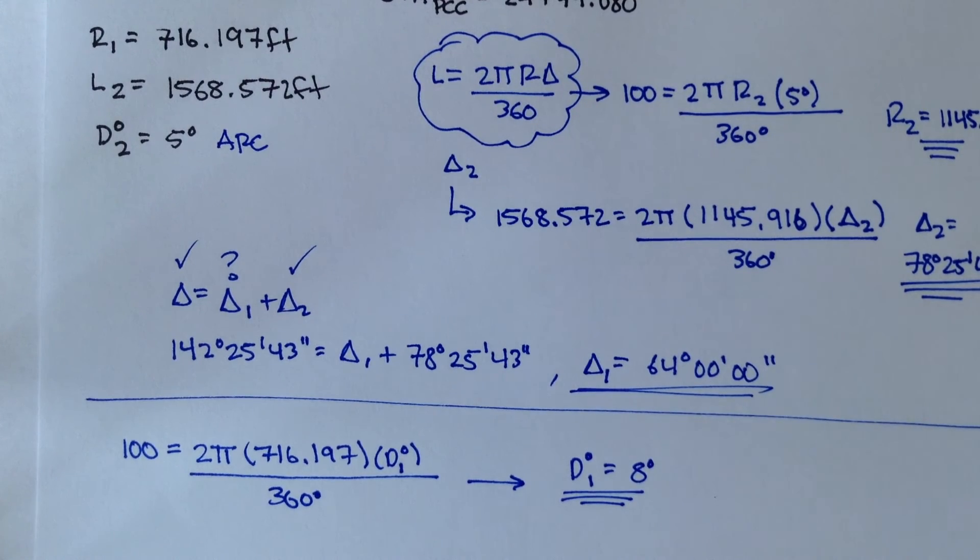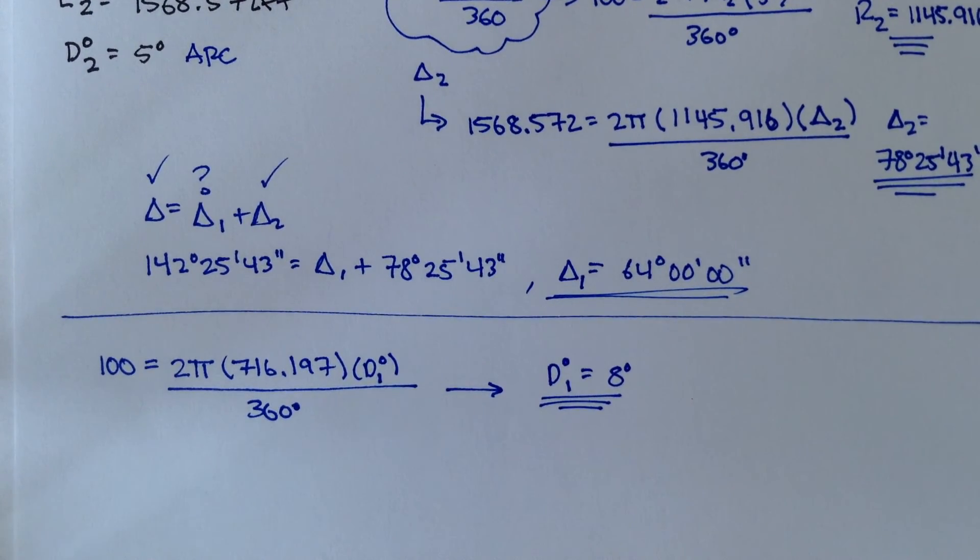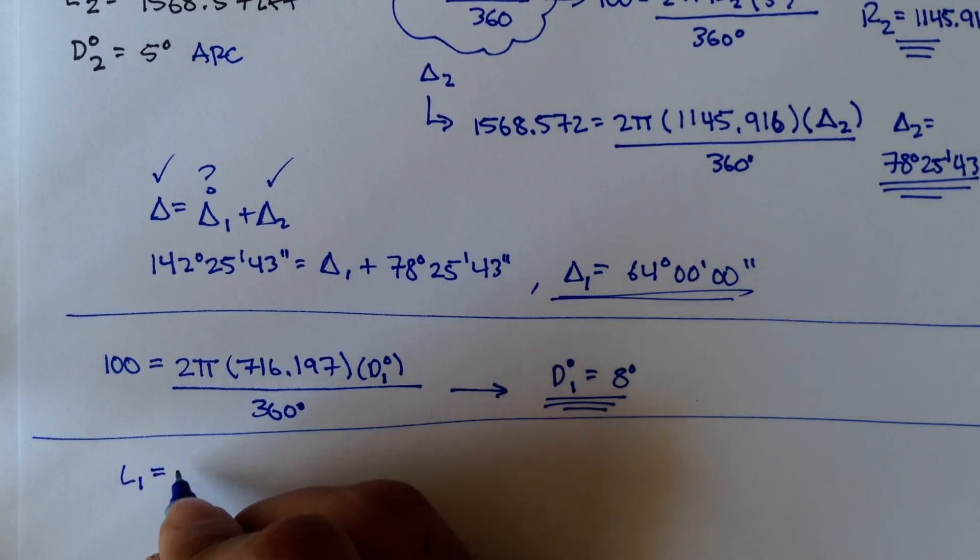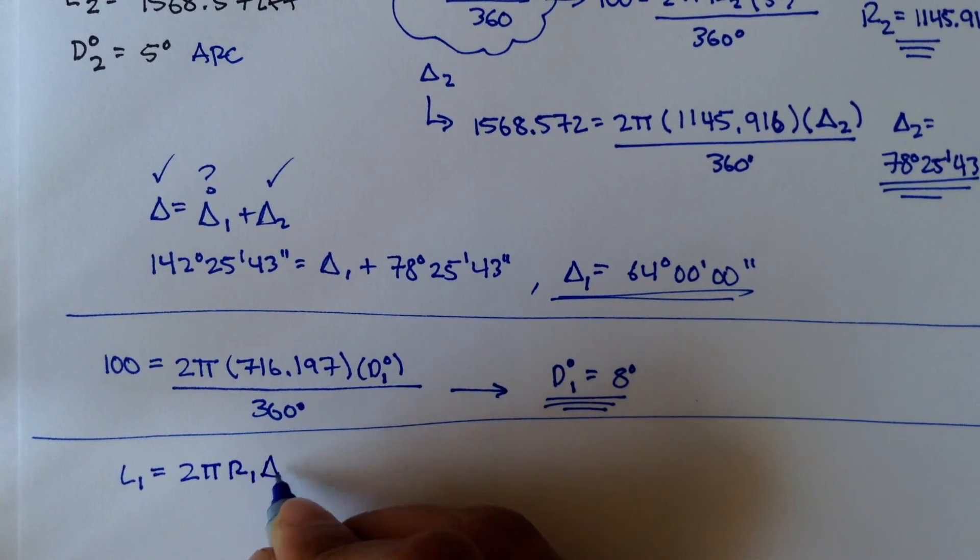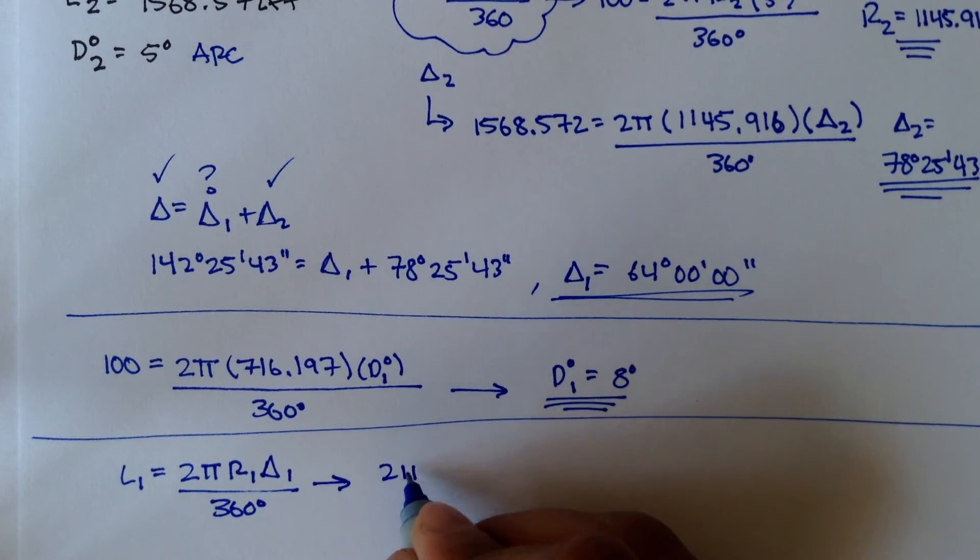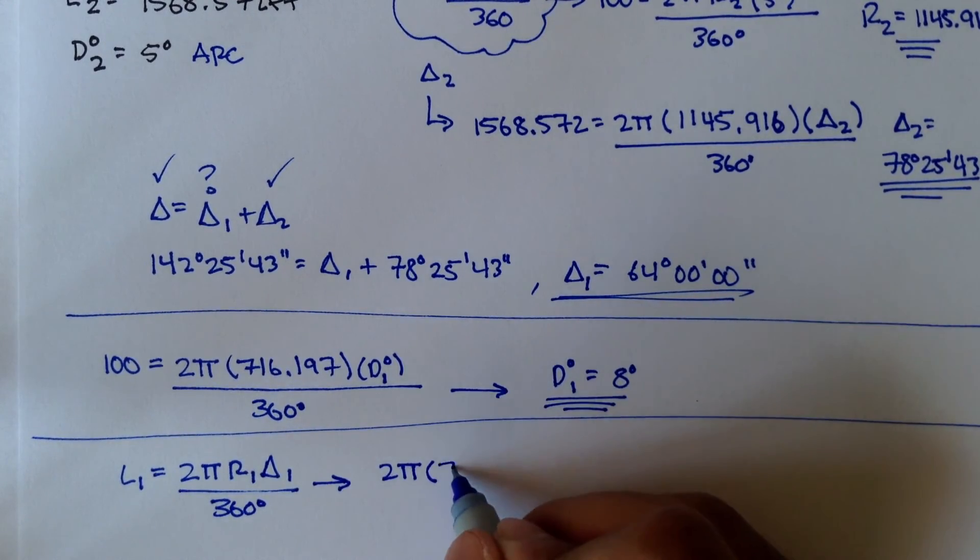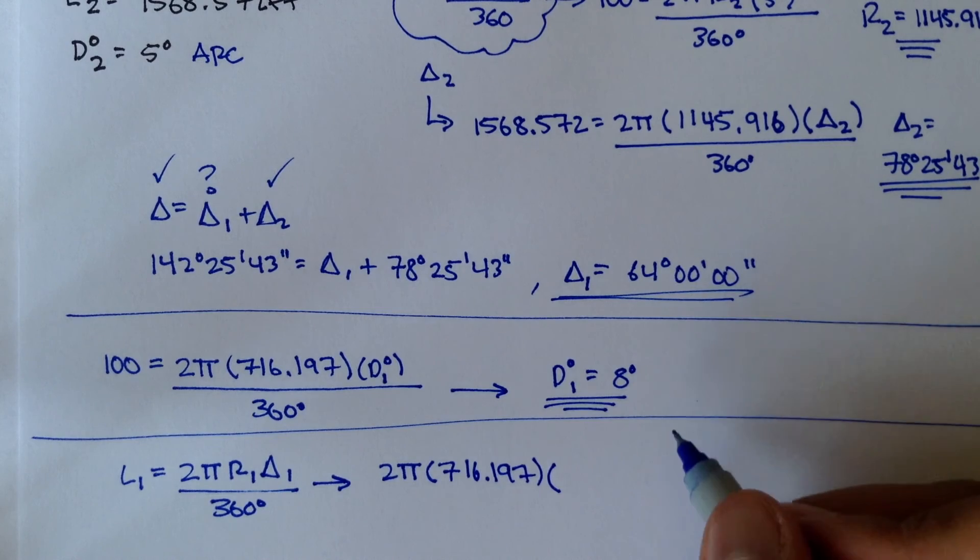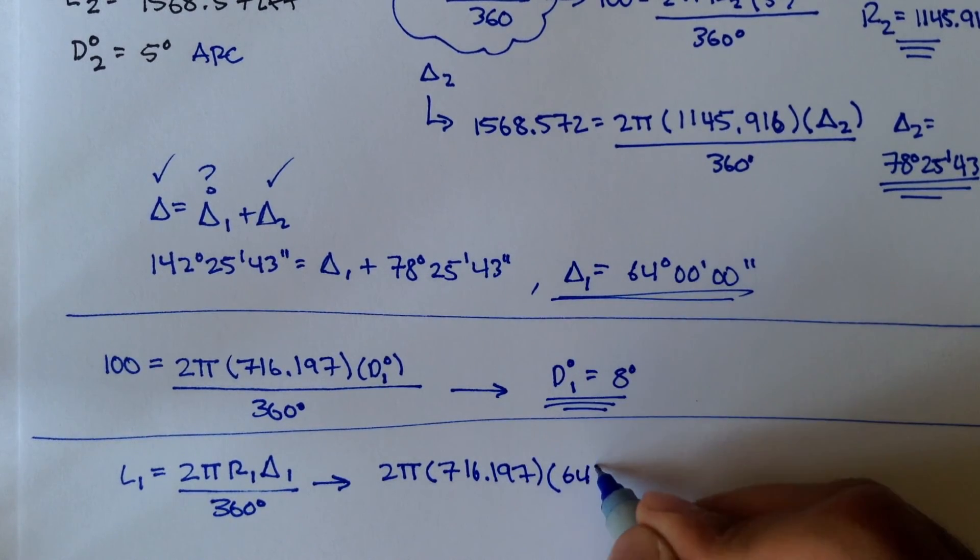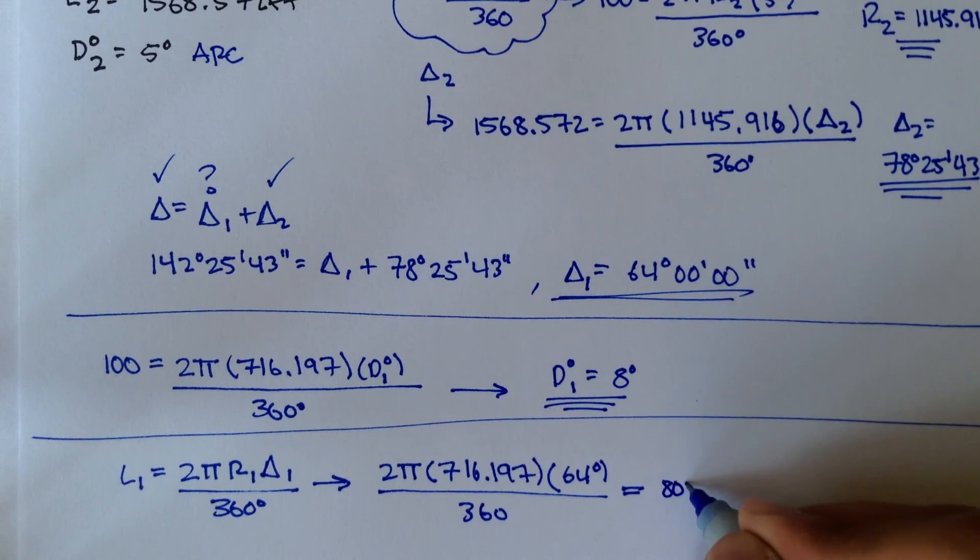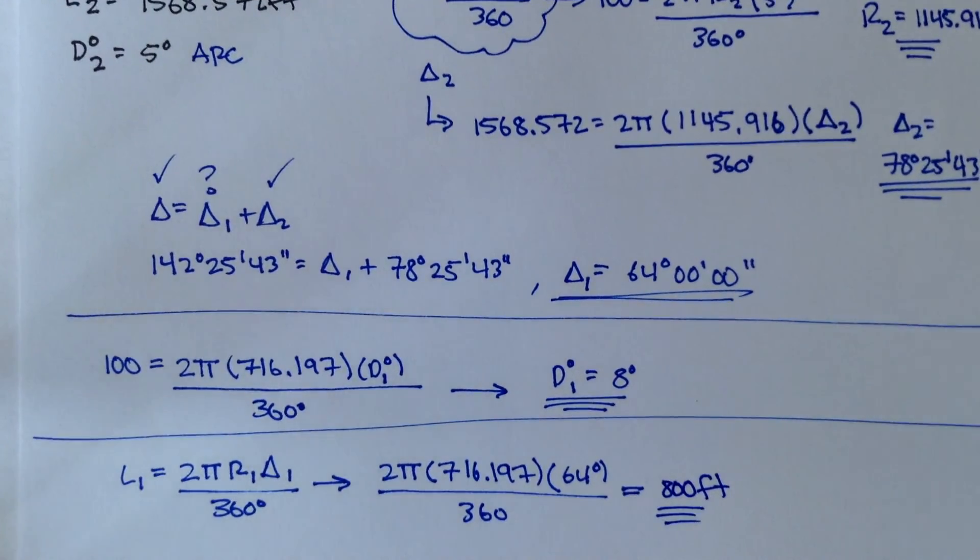Now, my fourth question is, what is L1? What is the length of curve 1? And length is equal to 2 pi r1 delta 1 over 360 degrees. We can plug that in. 2 pi r1. R1 was 716.197. That was given. And our interior angle, delta 1, was this nice 64 degrees. That's all divided by 360. We can plug this into our calculator. We should get a very nice 800 feet even.